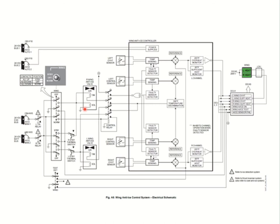Importantly, the wing anti-ice controller never controls the solenoid - that's done simply by switch position. If there's an overheat condition, the crew must turn off the anti-ice to close the solenoid. The controller's power supplies are always on so it is always energized regardless of switch position, because the overheat condition is always being monitored. In standby mode the valve cycles between 49°C and 82°C - the controller is not controlling the valve at all in standby, but is still doing all overheat monitoring.